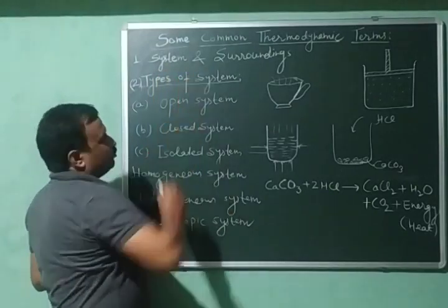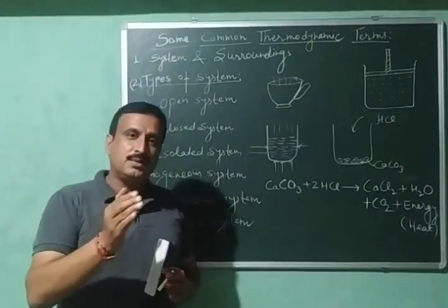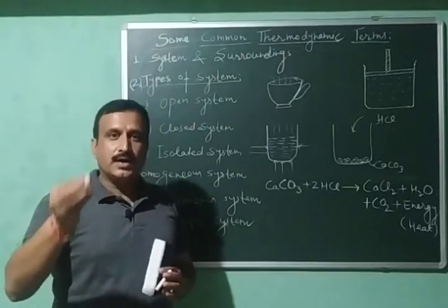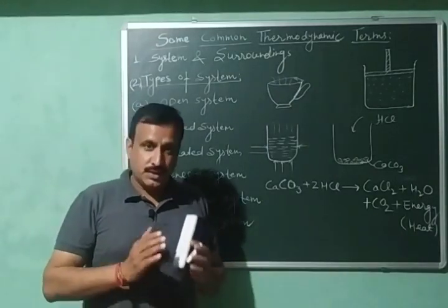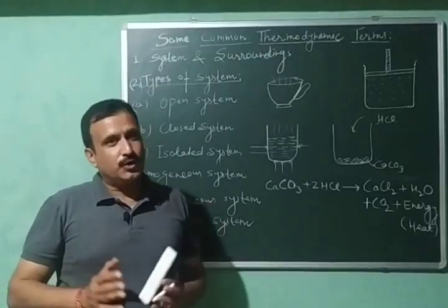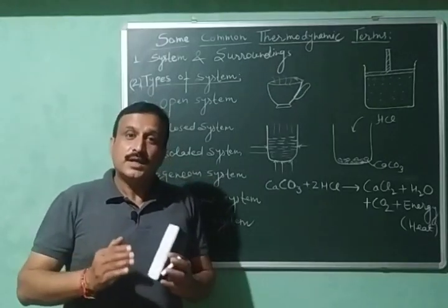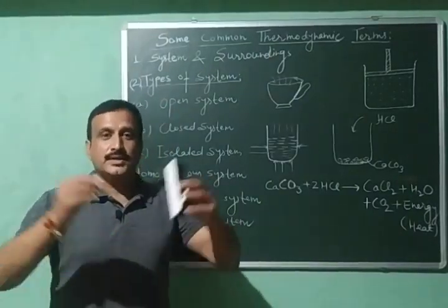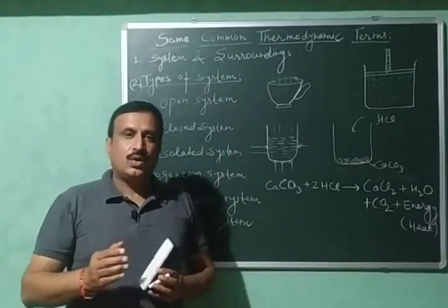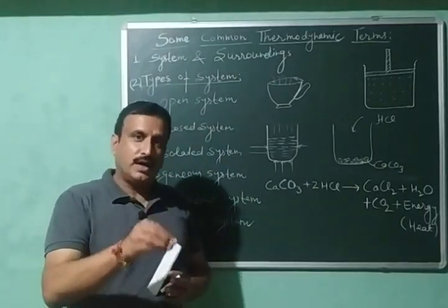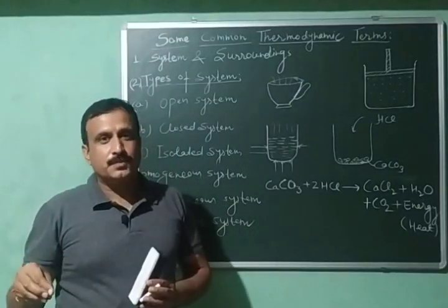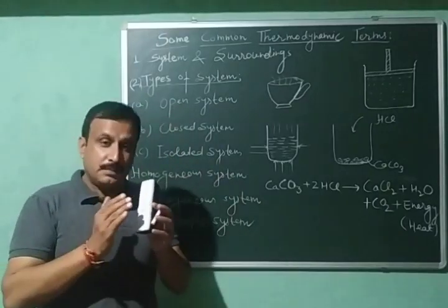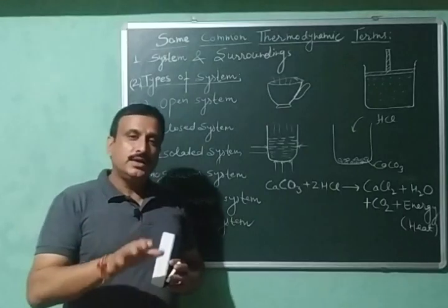The first term is system and surroundings. A system is the part of the universe under investigation or under thermodynamic observation. For example, if I am teaching a class in a classroom, then that classroom is the system and the rest of the universe is the surroundings. Or if I am performing an experiment in a lab, the place where I perform the experiment with my equipment and chemicals is the system, and the rest of the universe is the surroundings. The system and surroundings are separated by a definite boundary, which could be real or imaginary.